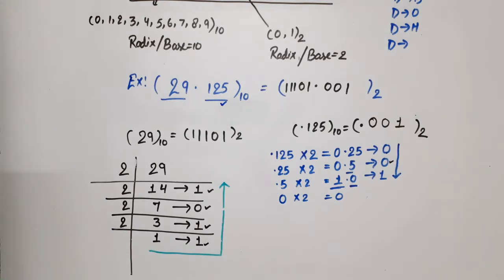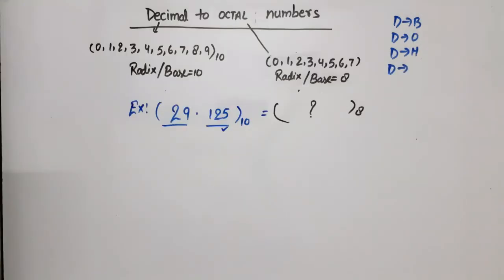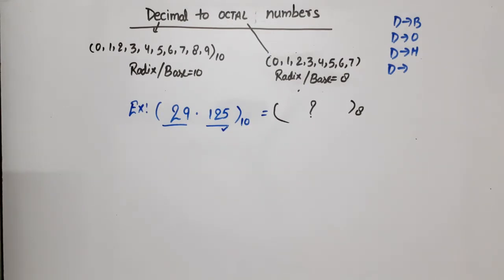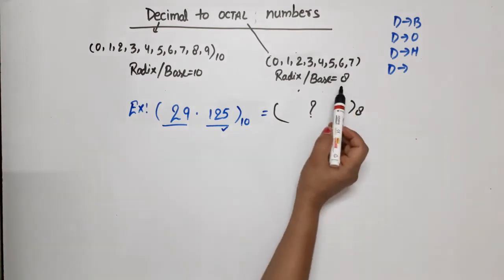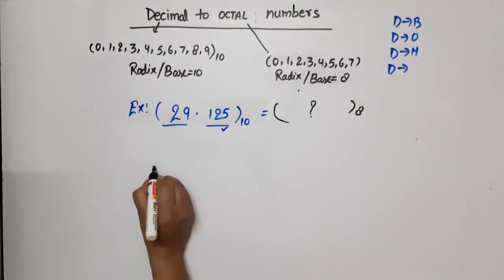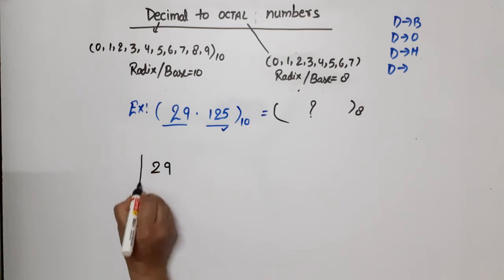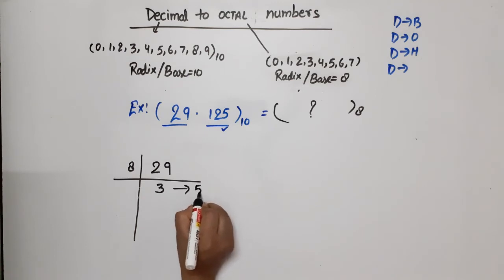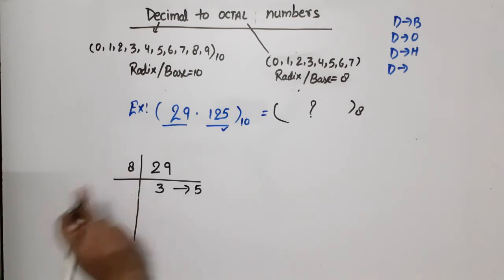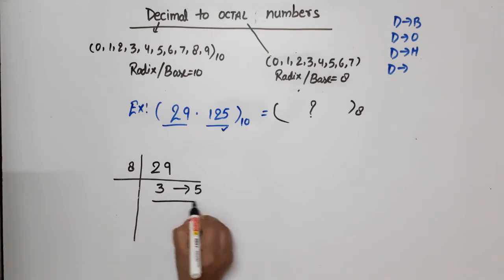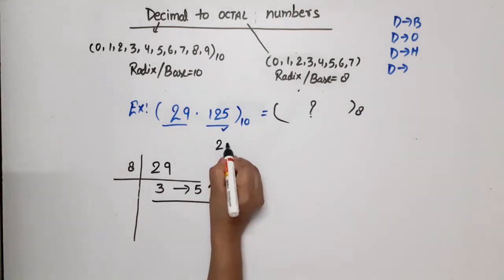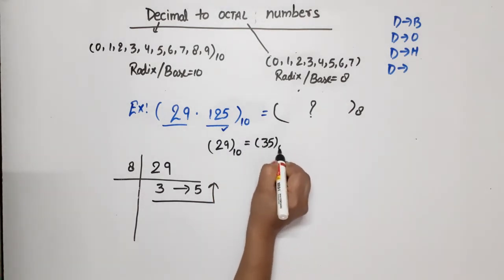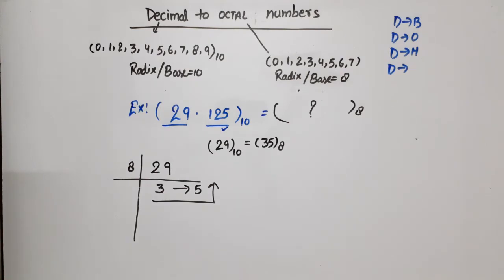Now for the same example we will do decimal to octal conversion. Octal numbers range from 0 to 7 and the radix is 8. We convert 29 to octal by dividing by 8: 29 ÷ 8 = 3 remainder 5. Since 3 is less than 8 we stop. Reading down to upward, 29 in decimal equals 35 in octal.